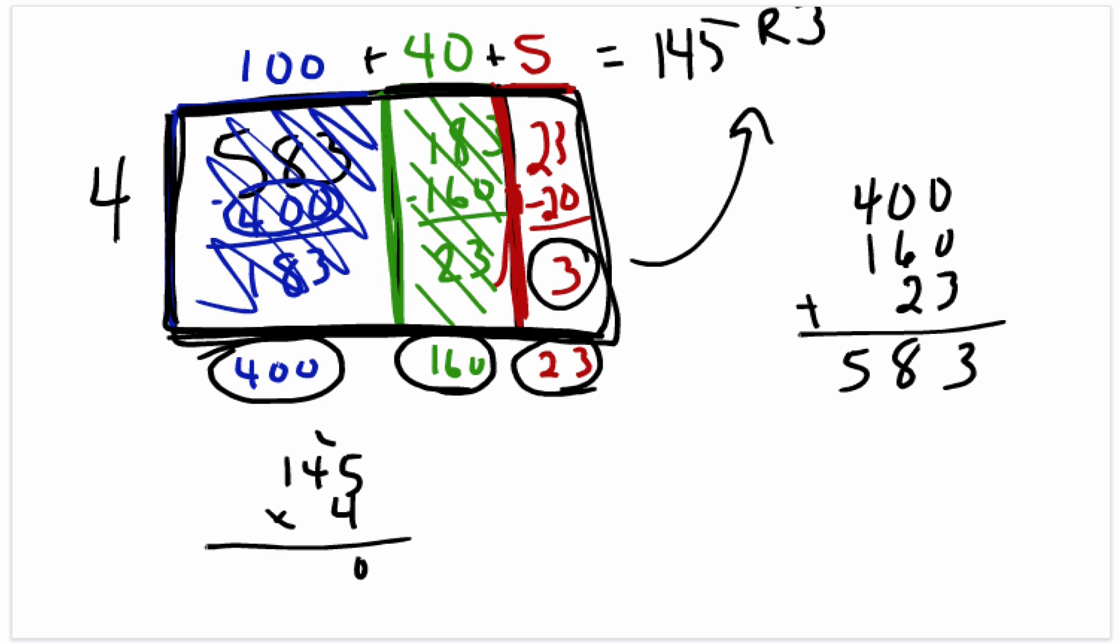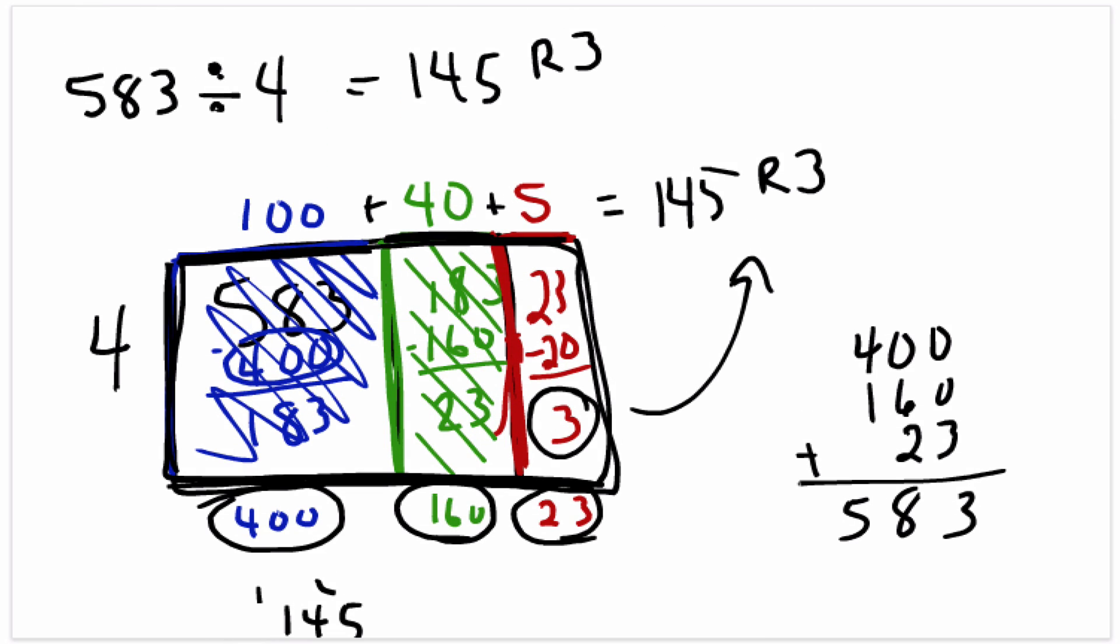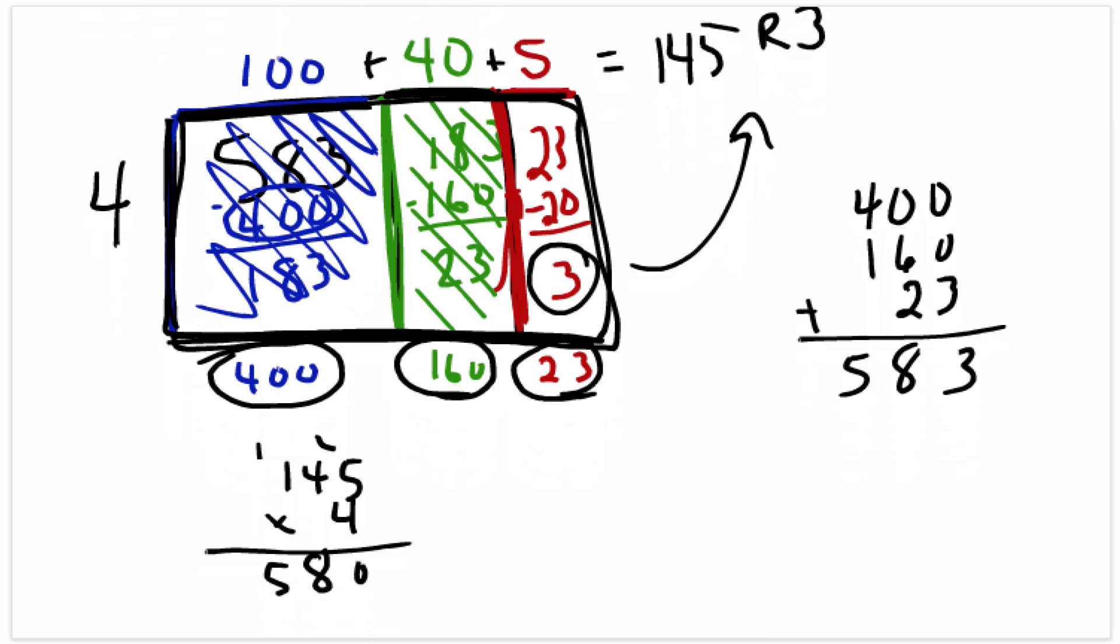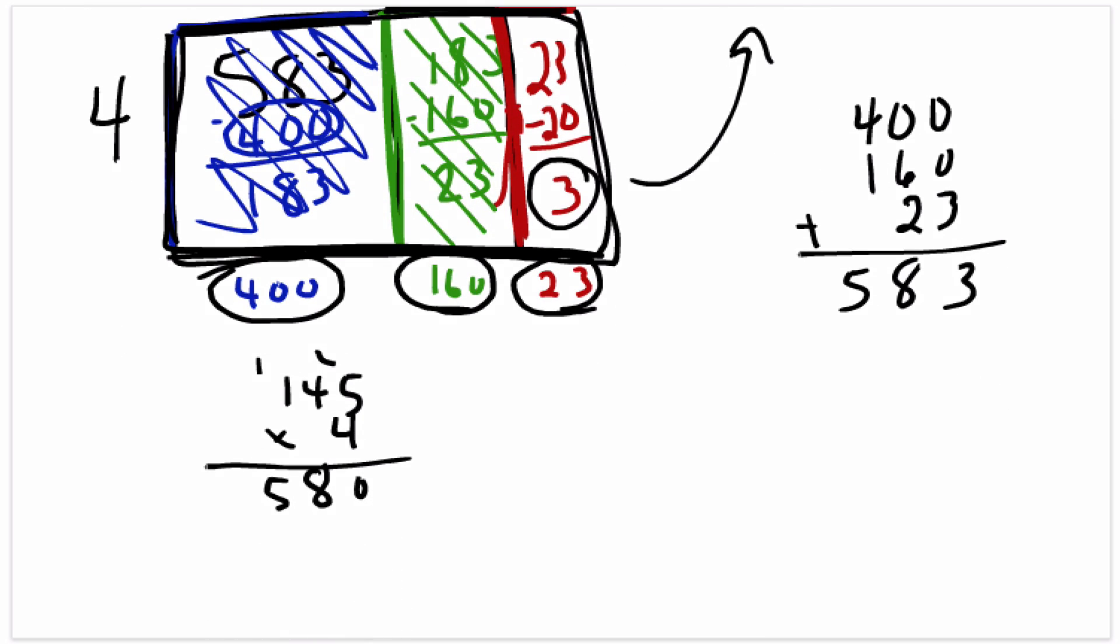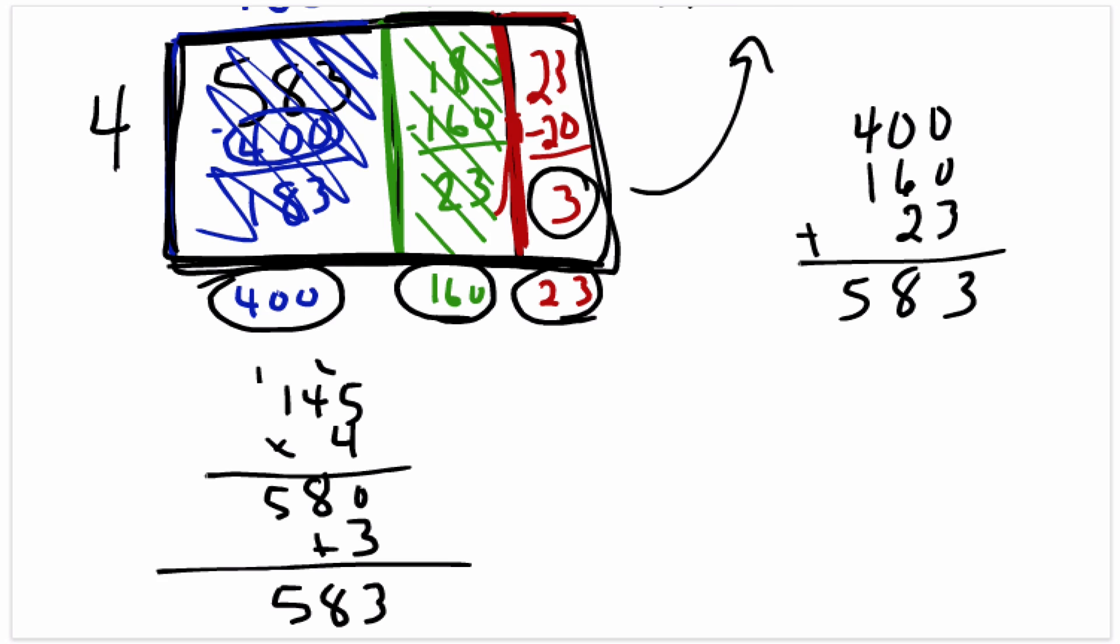And that gives us 580, which is not the 583 we started with, but that's because we had a remainder of 3 little units left over, and there's our 583.